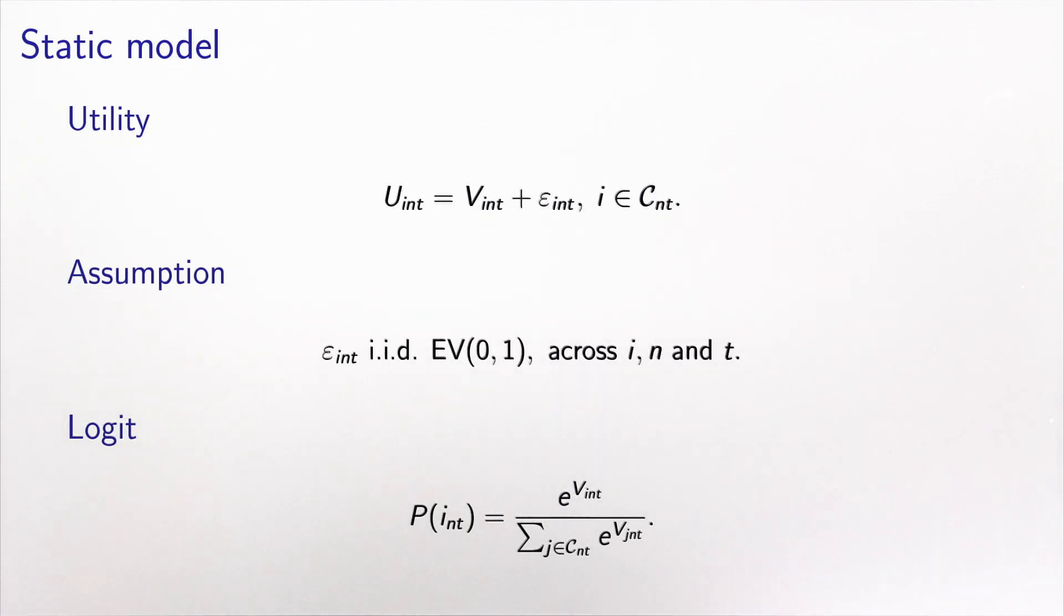Let's write the equation. The utility specification of the static model involves three indices: the alternative and individual, i and n, but now we have also t, which is the time period. As we did for the choice model with cross-sectional data, we separate the utility into a deterministic part, capital V, and a random term, epsilon.